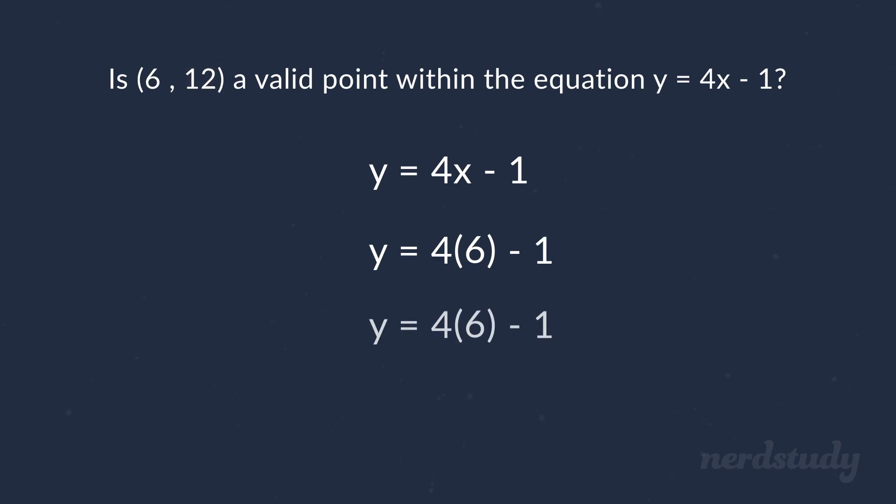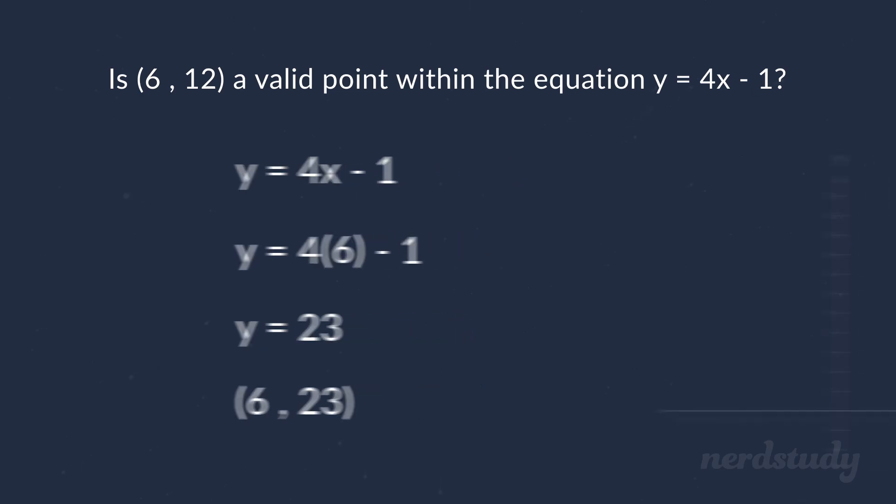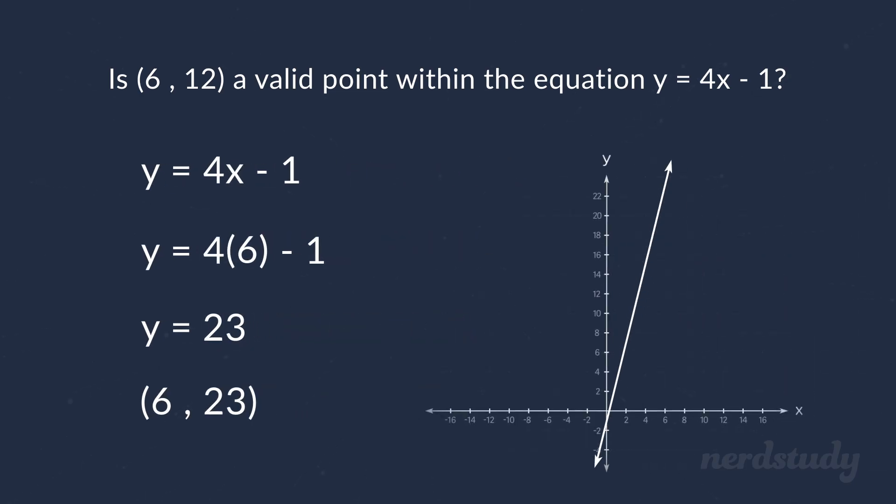But when we do plug it in, we can see that this part becomes 24 minus 1, making y equal to 23. So, the coordinate that does exist for this equation would have been (6, 23), making the coordinate (6, 12) just a random point below the graph.